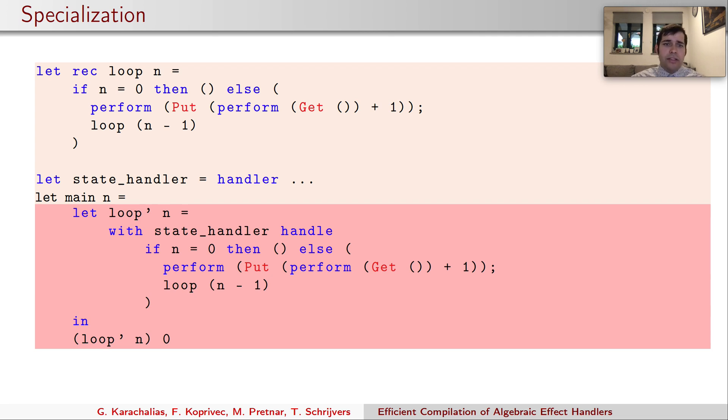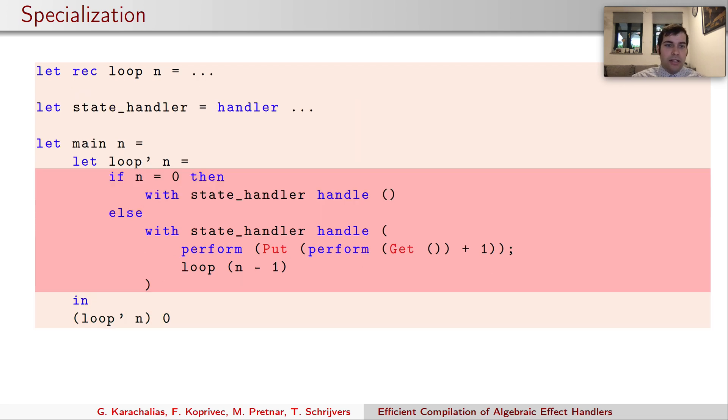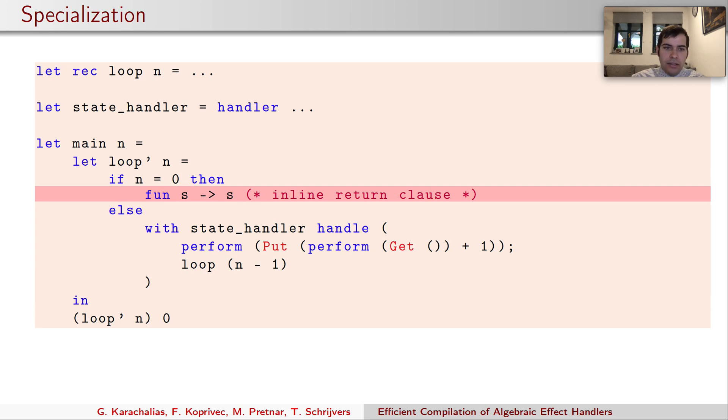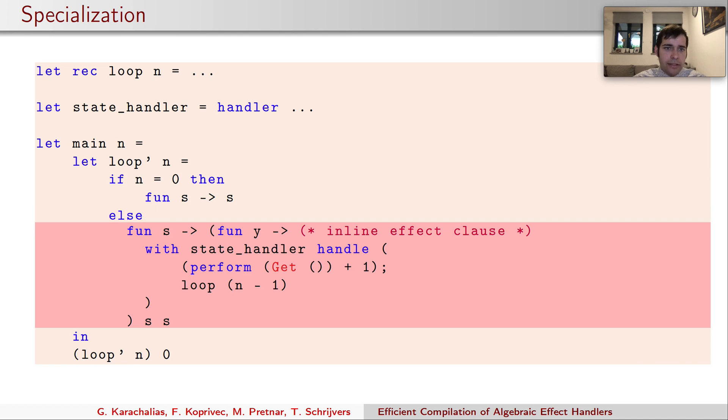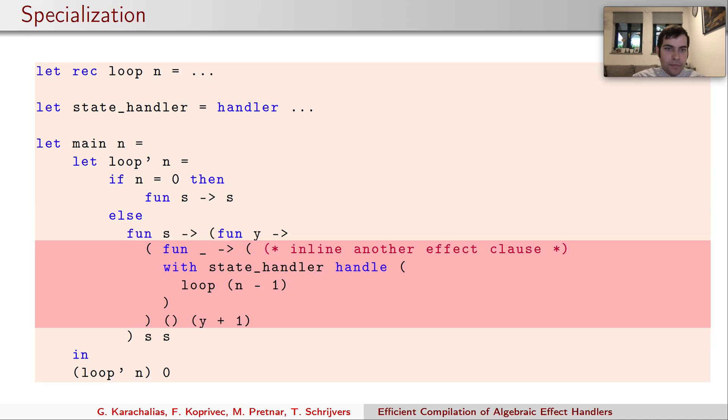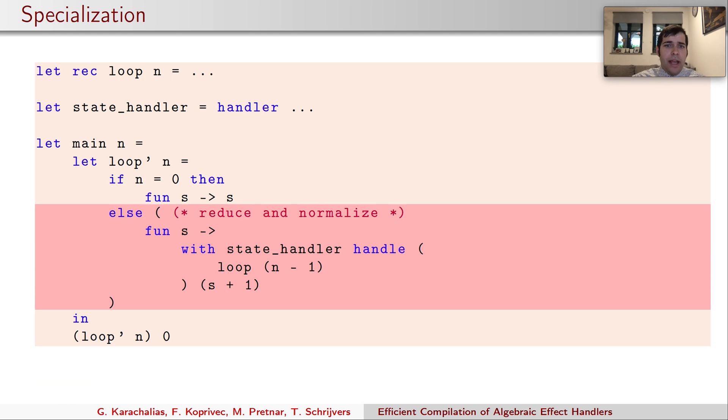Here the standard rewriting rules presented before can kick in. We firstly push the handler inside the conditional and here we can inline the return clause. Then we can inline the clause for set effect and also inline the clause for get effect. We are left with this and here the reduction rules can kick in. We reduce and normalize everything. And what we are left with is the state handler wrapped around the call to loop applied to n-1.